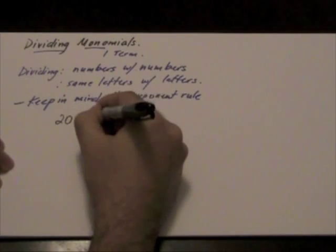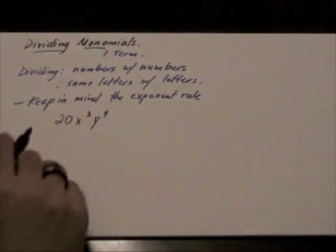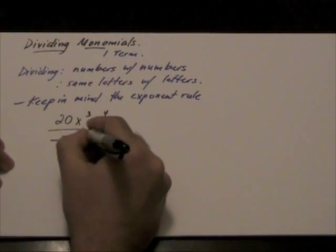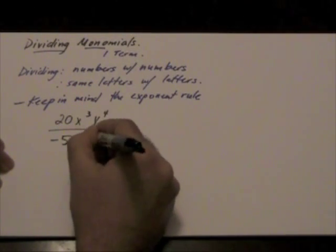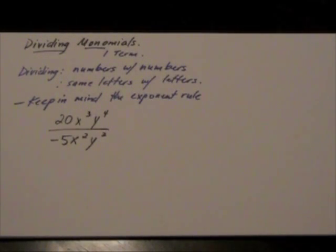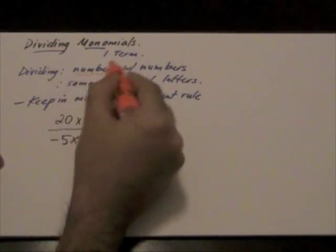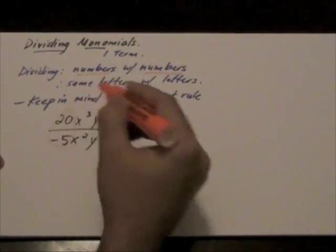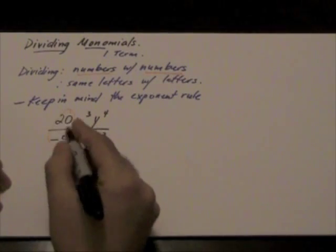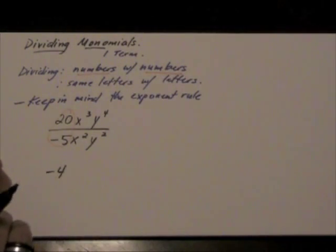20x to the power of 3, y to the power of 4, divided by negative 5x to the power of 2, y to the power of 2. So just as we said here, numbers with numbers. We're going to divide the two numbers, 20 divided by negative 5, will give me negative 4.